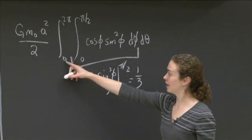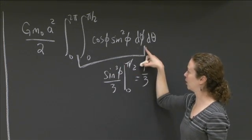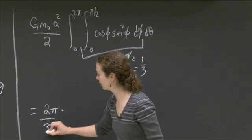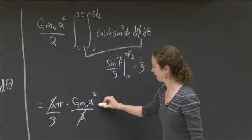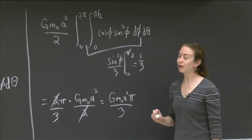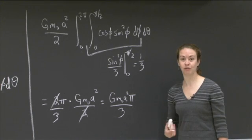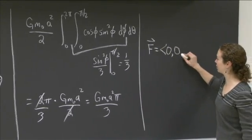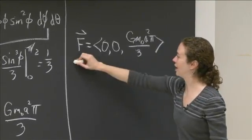So I've got 1/3 from the inner integral times 2 pi from the outer integral, giving 2 pi over 3, times G m0 a squared over 2. Simplifying that, I just get G m0 a squared pi over 3. So the force of this solid half sphere acting on the mass m0 — where the mass is positioned at the center of the base — is: by symmetry the first two components are 0, and the last component is G m0 a squared pi over 3. That's my final solution.